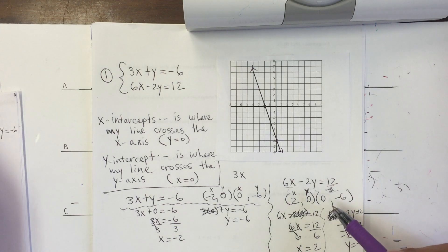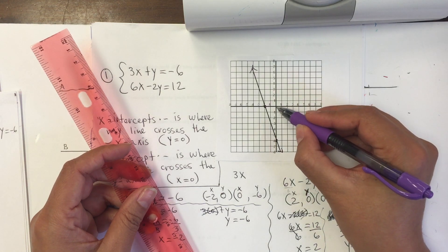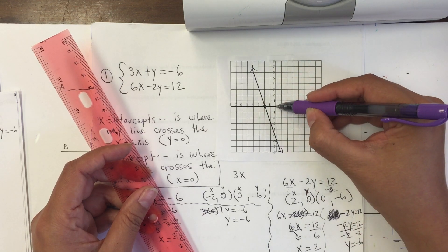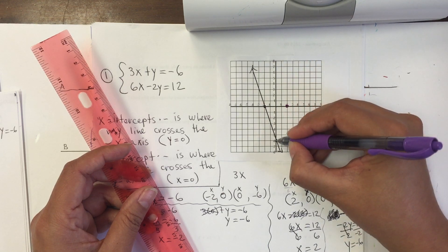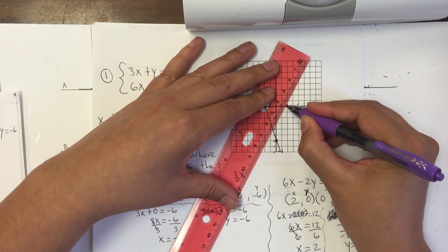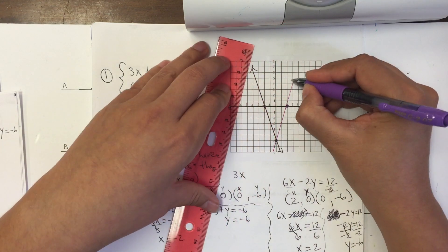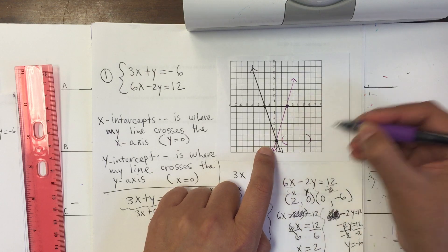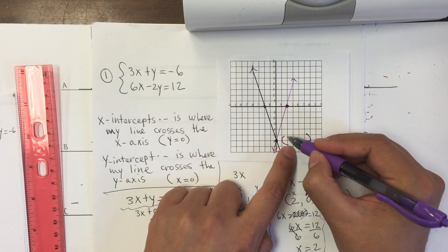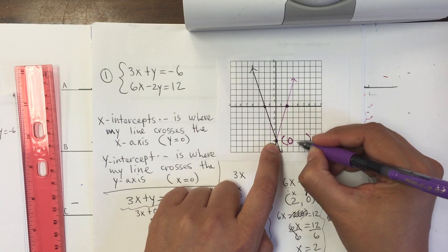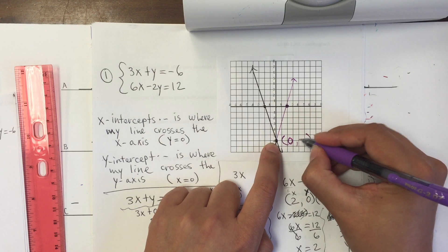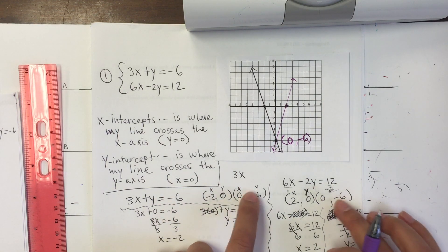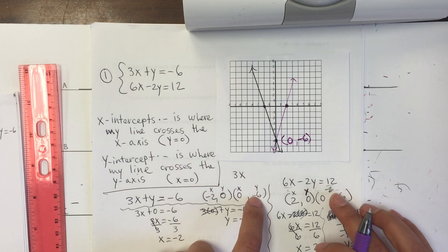Now I have my two points: 2, 0 and 0, negative 6. The solution is where the two lines meet, and it's right here. So my solution is 0, negative 6 — that's the point where they meet. It was a coincidence that that point is in both of the intercepts, but that will not always be the case.